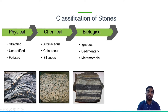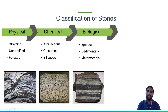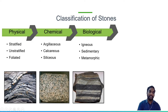Coming to unstratified rocks: these cannot be split up in definite directions. Granite is an example — it has a uniform texture and is an example of igneous rocks. Next, coming to foliated rocks, which can be split up only in a definite direction, not in an entire plane. Depending upon the splitting nature and physical properties, stones are divided into stratified, unstratified, and foliated.